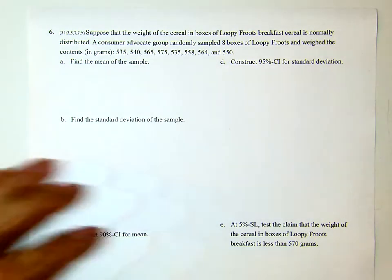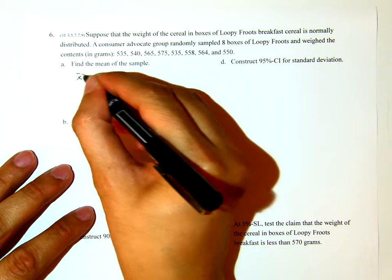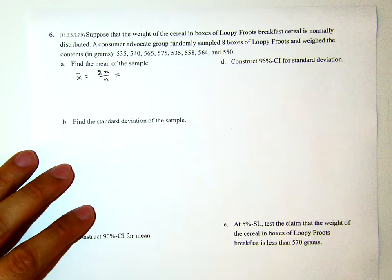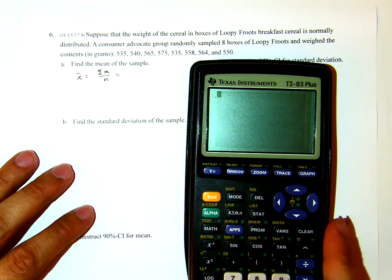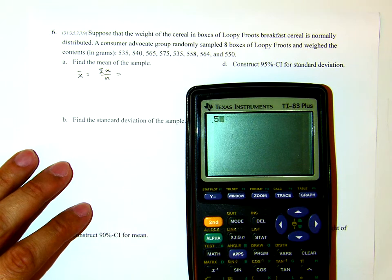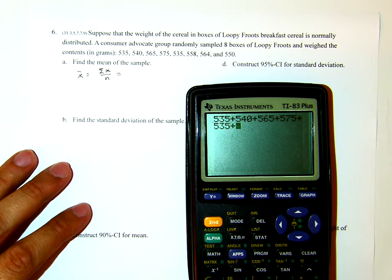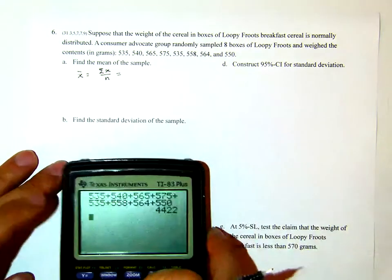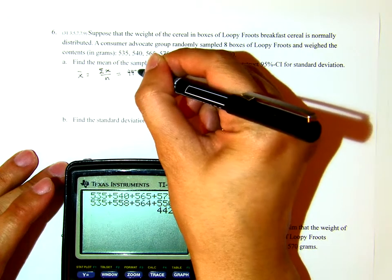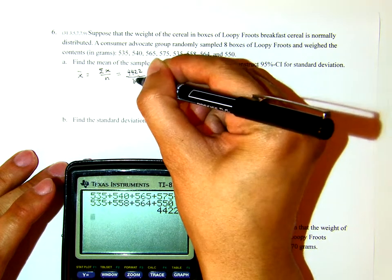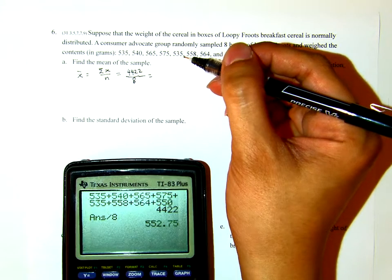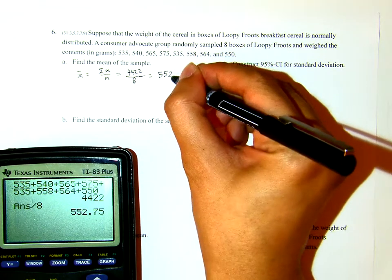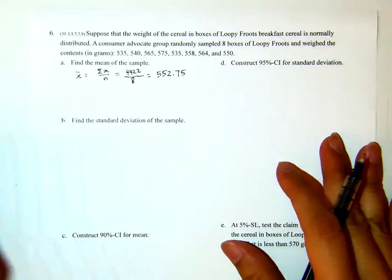Part A: find the mean of the sample. X bar equals the sum of X over n. I will find the sum: 535 plus 540 plus 565 plus 575 plus 535 plus 558 plus 564 plus 550. That's 8 data points. The sum is 4422 grams divided by 8, which equals 552.75 grams. That's the sample mean.